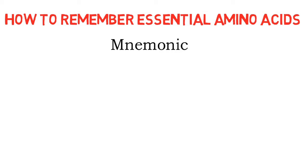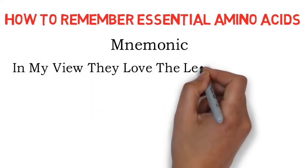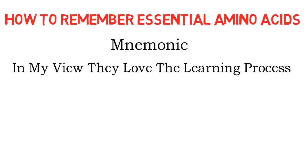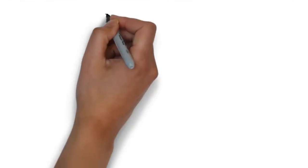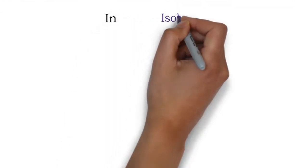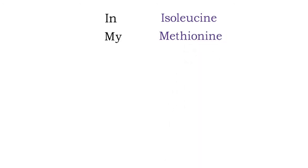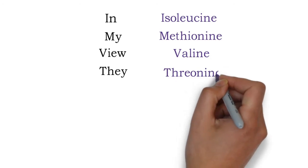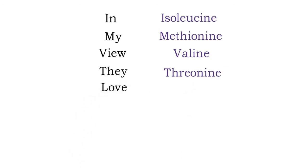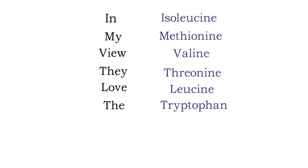To remember these amino acids, the mnemonic is: 'In My View They Love The Learning Process.' The first letter I is for isoleucine, M is for methionine, V is for valine, and T is for threonine.